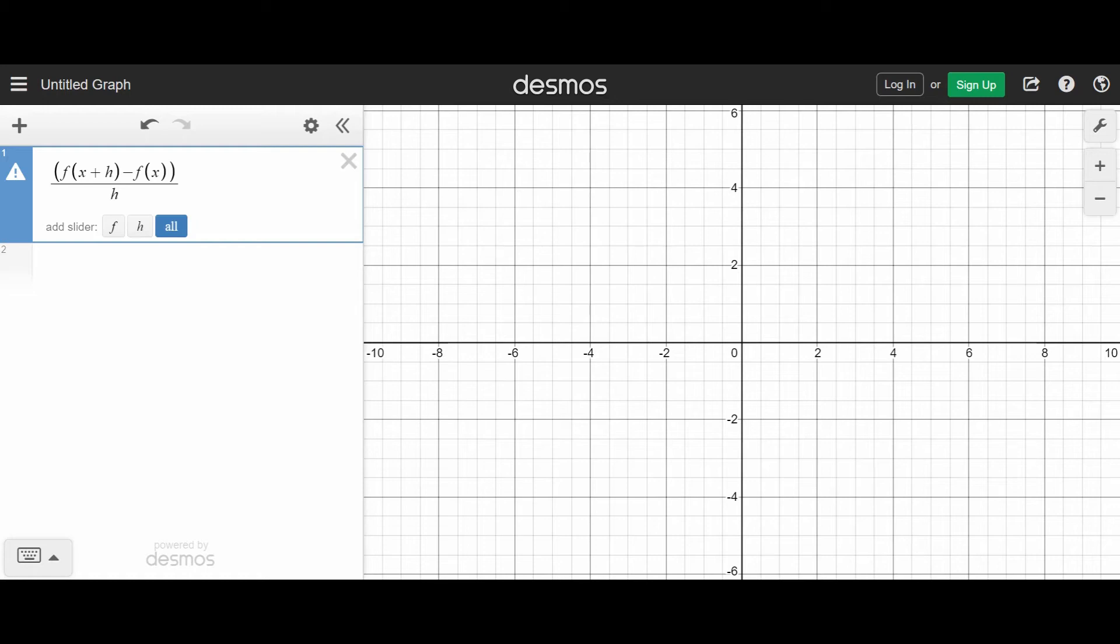It's just a function version of the slope calculation: y2 minus y1 divided by x2 minus x1. It's really important for everybody to understand that the difference quotient is just a function notation version of the slope calculation.